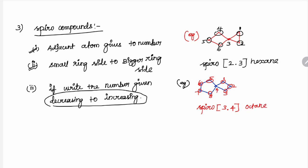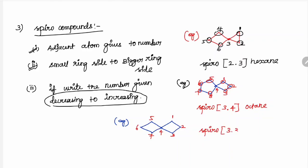Another example: 4-member, 4-member, 4-member — a spiro compound with three rings. Any side can be given first; adjacent atom is numbered accordingly: 1, 2, 3, 4, 5, 6, 7. Spiro[3.3] — one, two, three here; one, two, three here. Seven carbons available: Heptane. So the name is Spiro[3.3]heptane.